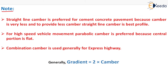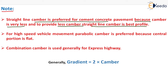Note: straight line camber is preferred for cement concrete pavement because camber is very less in the case of rigid pavement. To provide very less camber in a rigid pavement, the straight line camber is the best profile. That's why straight line camber is generally preferred for cement concrete pavement.